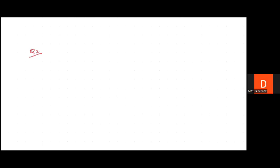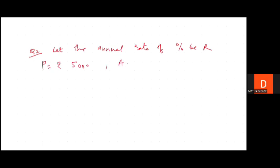Find the annual rate of compound interest at which rupees 5,000 becomes rupees 5,832 after two years. We have to find out the rate of interest. Let the annual rate of interest be R. Principal is rupees 5,000, amount is rupees 5,832, and time is 2 years. Formula: Amount = P × (1 + R/100) raised to the power N.